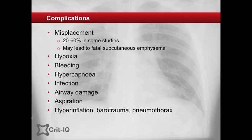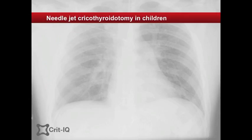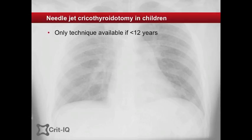Because of these limitations, needle cricothyroidotomy is largely viewed as a temporising measure to buy time until other methods of airway access can be performed. Needle cricothyroidotomy remains the only emergency technique available to patients under the age of 12 years, due to the higher risk of significant damage caused by alternate methods in this group. Lower flow rates in the range of 10 to 12 litres per minute should be used.